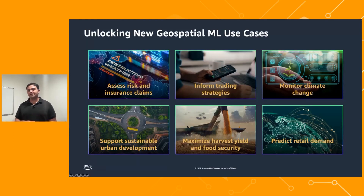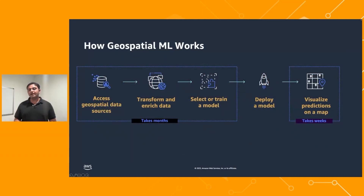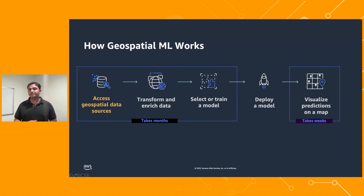Although there are so many use cases, it is still challenging for organizations to work with geospatial data. A typical geospatial machine learning workflow has five steps. First, acquiring data is a slow process. Customers who want to access geospatial data need to build connectors to read data from open data sources or negotiate deals with third-party vendors to get access to data — just to access the data before you can even get started with the machine learning workflow.